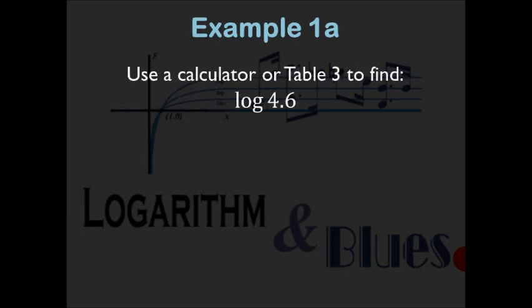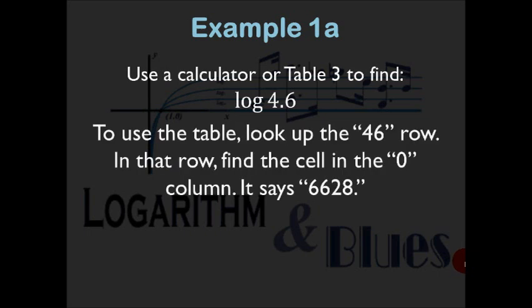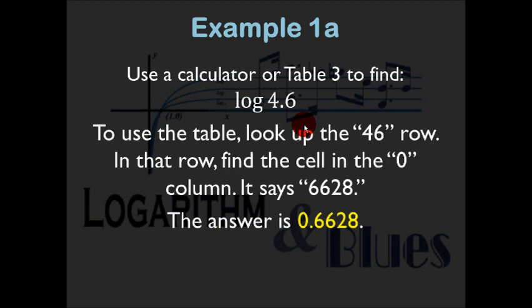Example 1A: use a calculator or Table 3 to find log 4.6. With a calculator, you just plug it in. Using the table, go to the 46 row — remember the table represents numbers between 1 and 10, so n is 46. Go to column 0 for the third digit, and you will see 6628. So log 4.6 ≈ 0.6628.